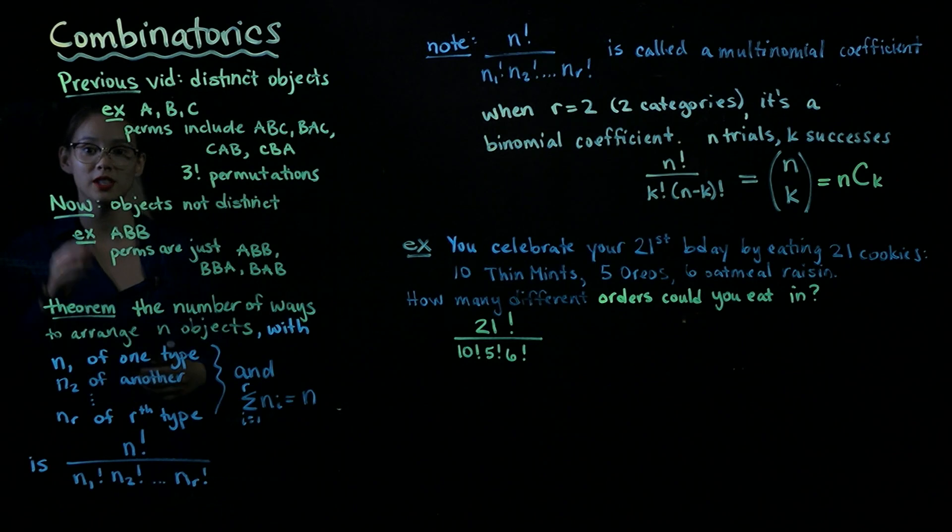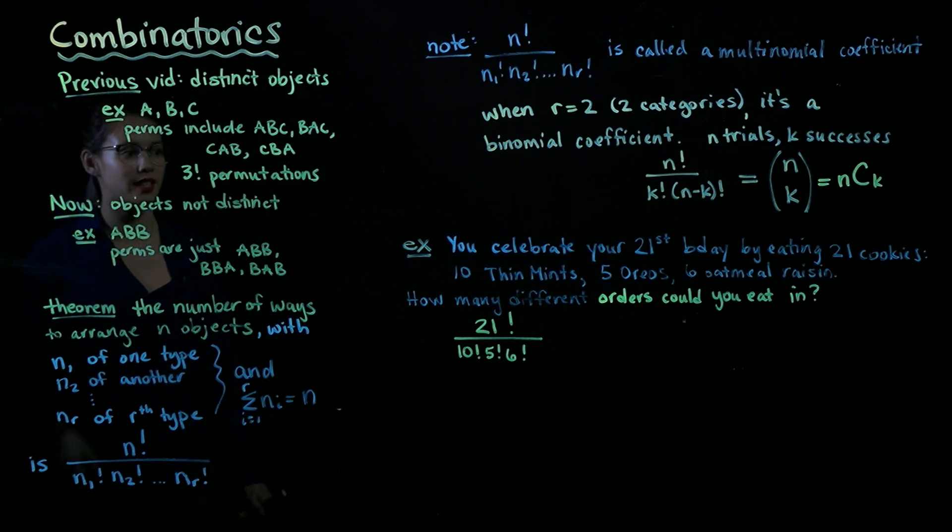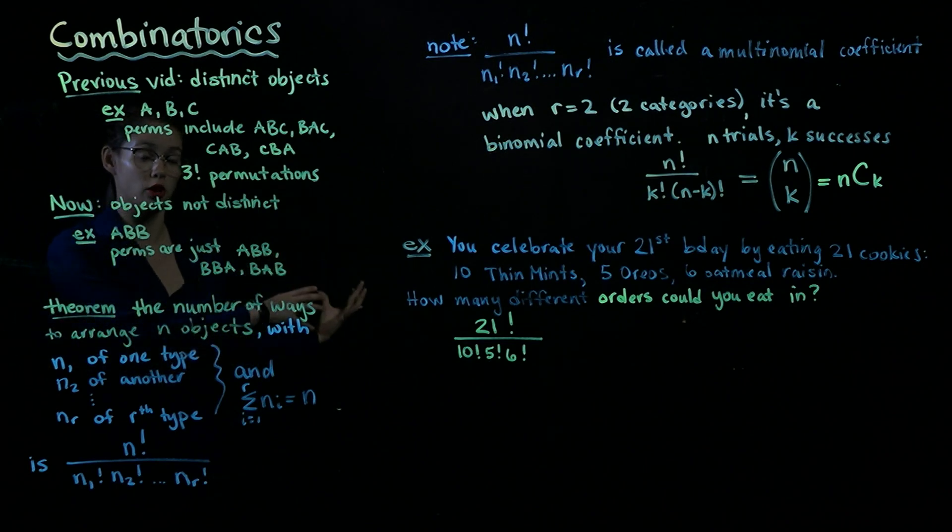So let's do an example. Imagine that you're turning 21 and you're going to celebrate your 21st birthday by eating 21 cookies. So you have 10 thin mints, 5 Oreos, and 6 oatmeal raisin cookies. Now imagine like these 10 thin mints, they all look exactly the same. They're essentially identical or exchangeable. Similar thing for the Oreos and similar thing for the oatmeal raisin cookies.